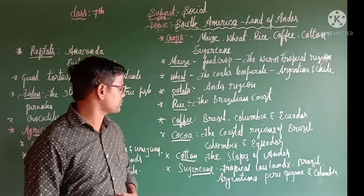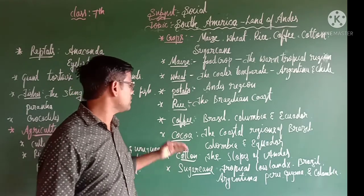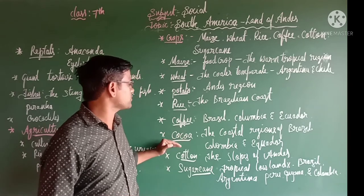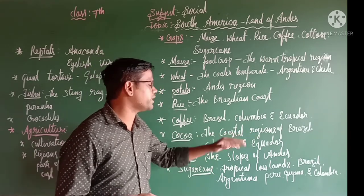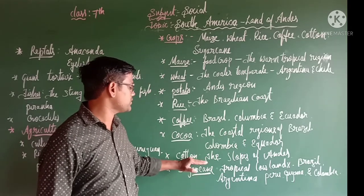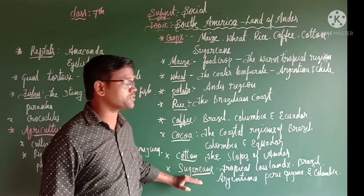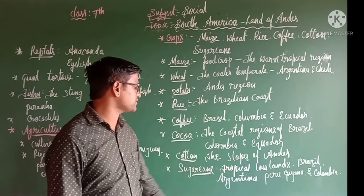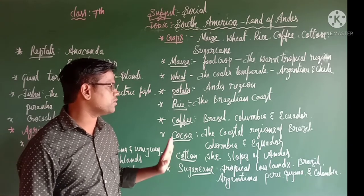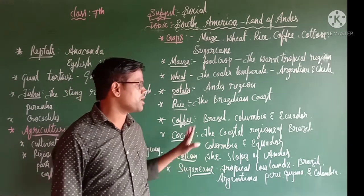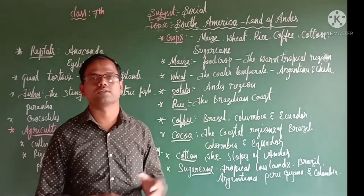Cocoa is another important crop grown in the coastal regions of Brazil, Colombia, and Ecuador. Cotton grows on the slopes of the Andes mountains. Sugarcane is grown in tropical lowlands of Brazil, Argentina, Peru, Guyana, and Colombia. Brazil is the second largest producer of sugarcane.